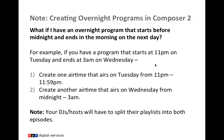A quick note about overnight programs: if a program starts at 11 p.m. Tuesday and ends at 3 a.m. Wednesday, create one airtime for Tuesday from 11 p.m. to 11:59 p.m. and another for Wednesday from midnight to 3 a.m. Your host will also need to split their playlist into both episodes. For something like Classical 24, this should happen automatically, but manual-entry hosts need to know their program was split.